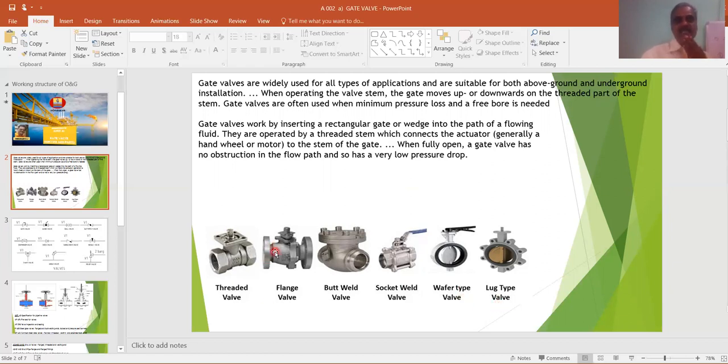These gate valves are widely used for all types of applications and are suitable both above ground and underground installations. When operating the system, the valve stem, the gate moves up or downwards on the threaded parts of the stem. Gate valves are often used when minimum pressure loss and a free bore is detected. Free bore means free flow.